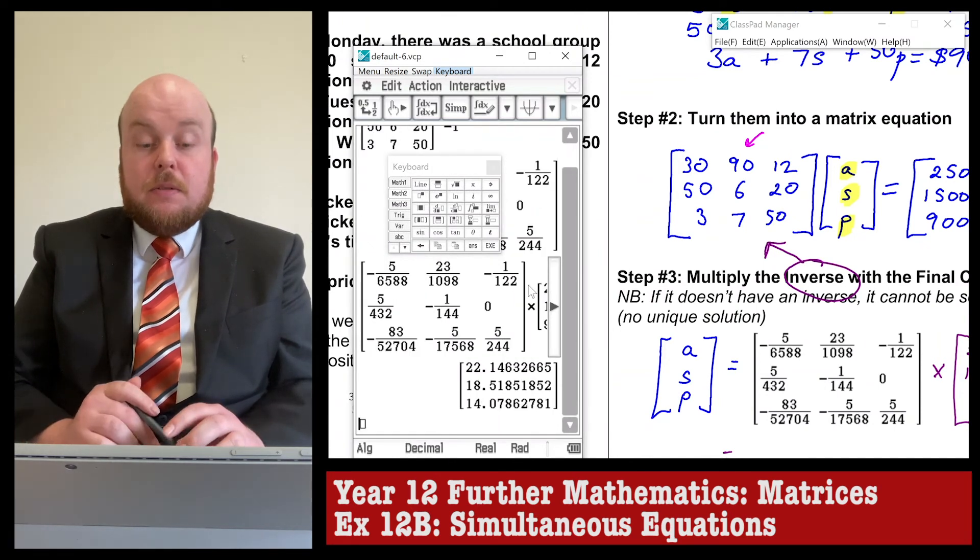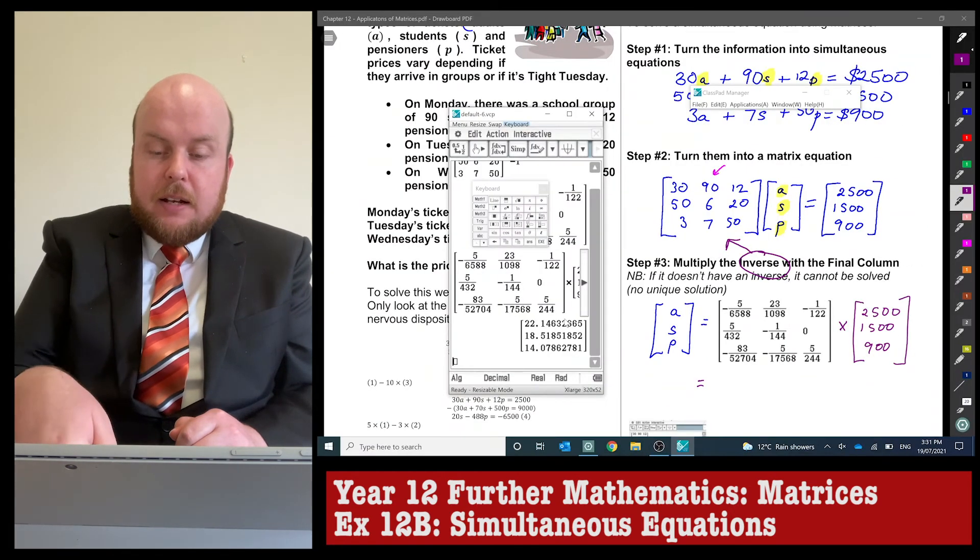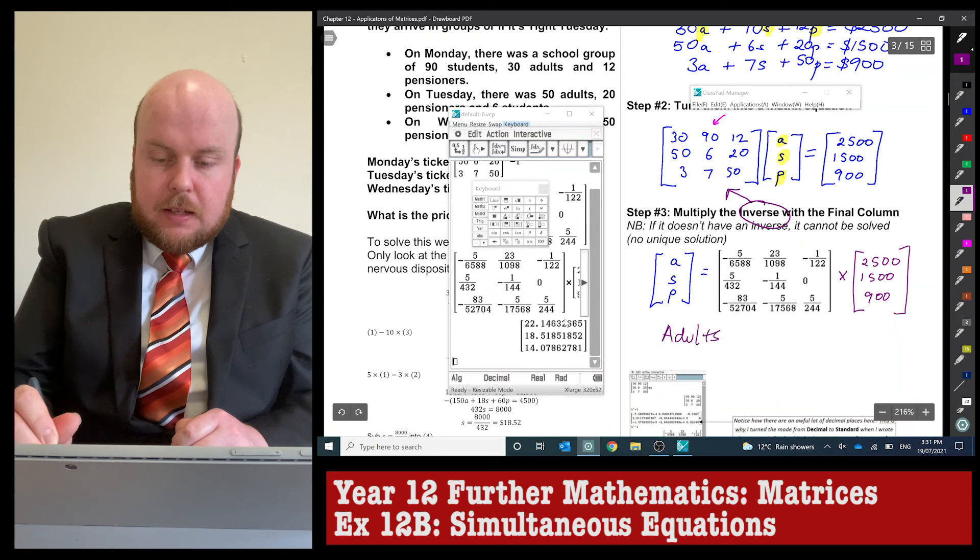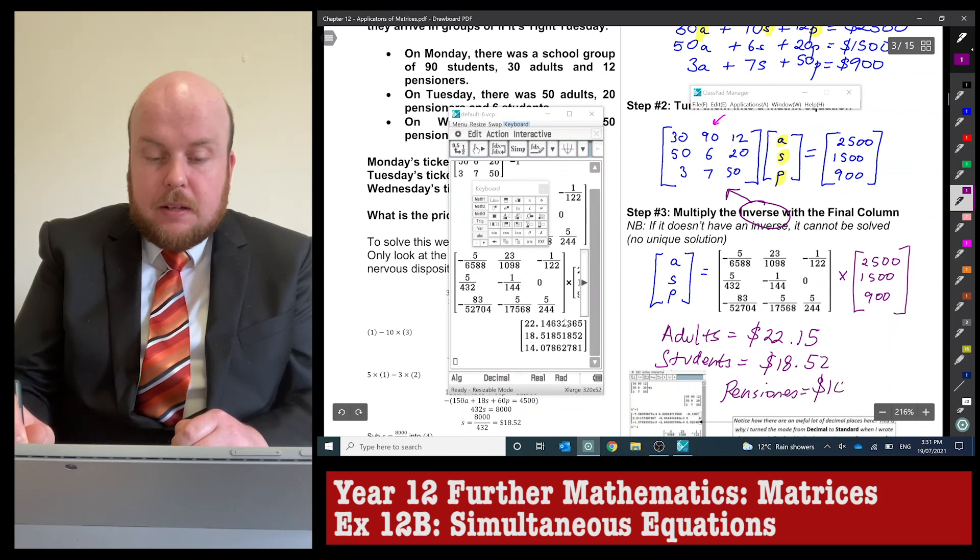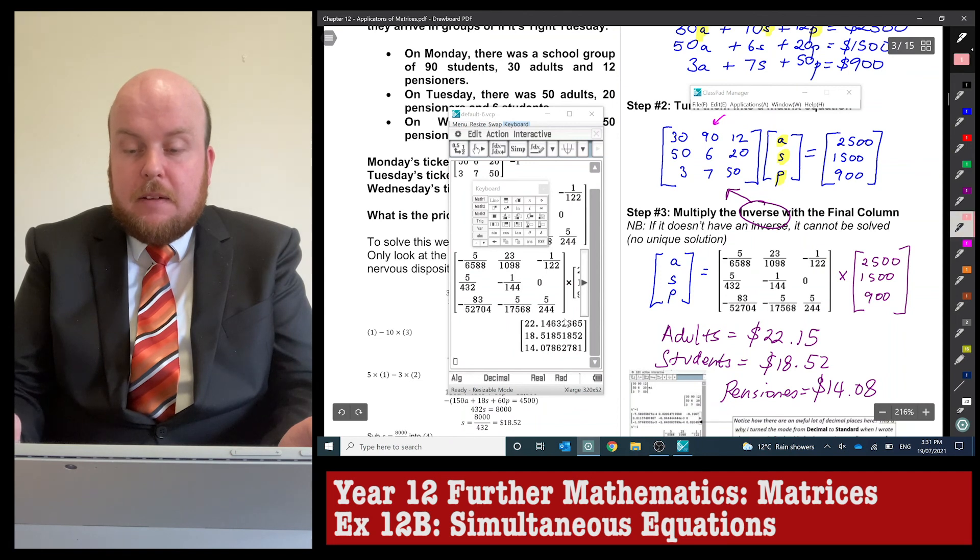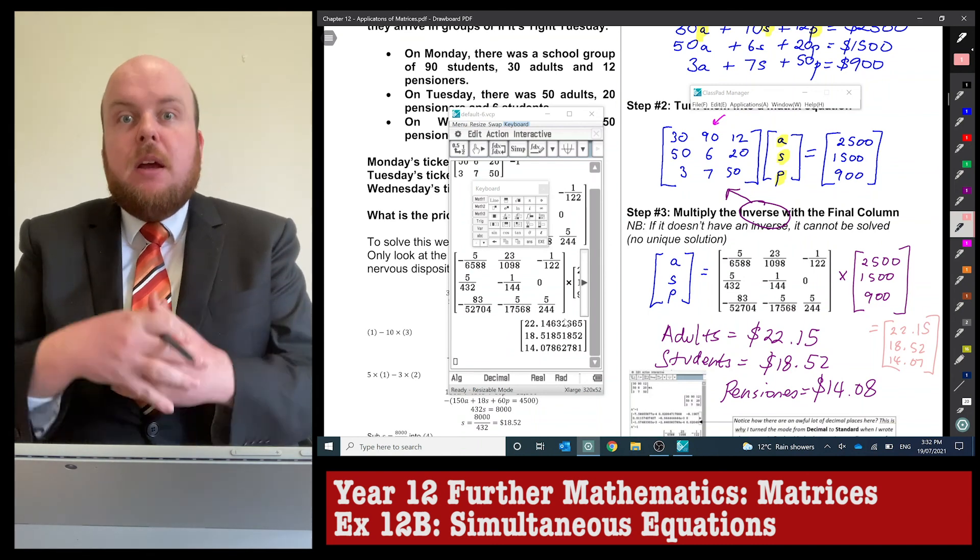We get our numbers in fraction form because I've still got on standard. I'm going to set it to decimal. Since we want dollars and cents, we can round it to two decimal places. The final answer is: adults equal $22.15, students equal $18.52, and pensioners equal $14.08. It's important to write your answers fully like that, because if you just put the final matrix with no context, because we don't know what variable you mean for which one, it is not considered the correct answer.